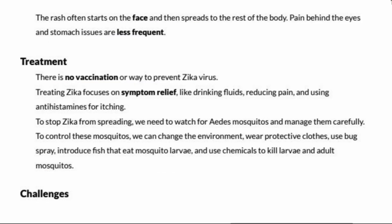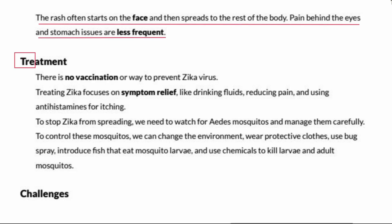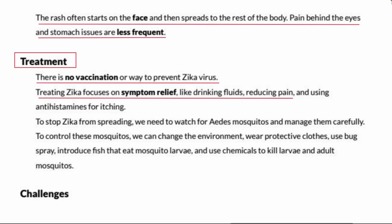A headache is also a common symptom. The rash often starts on the face and then spreads to the rest of the body. Pain behind the eyes and stomach issues are less frequent. Treatment: There is no vaccination or specific way to prevent Zika virus. Treating Zika focuses on symptom relief like drinking fluids, reducing pain, and using antihistamines for itching.